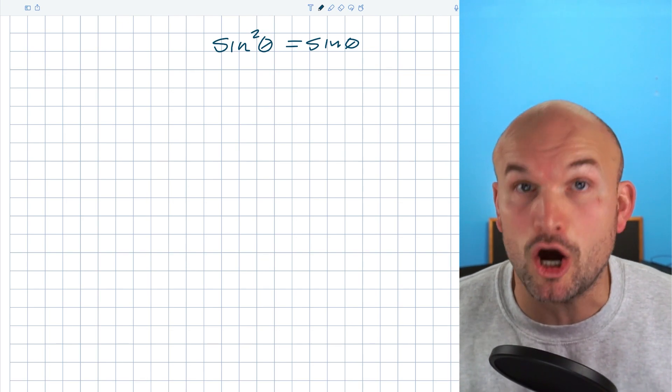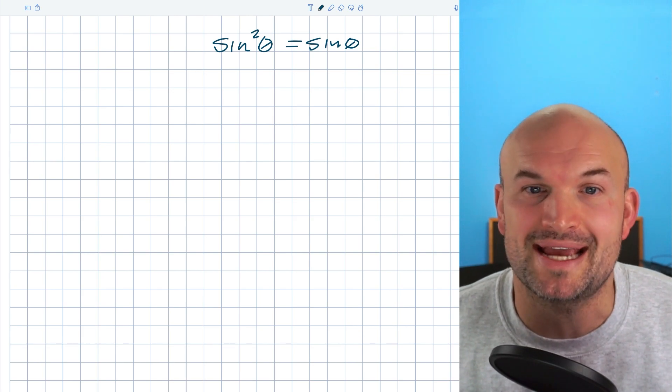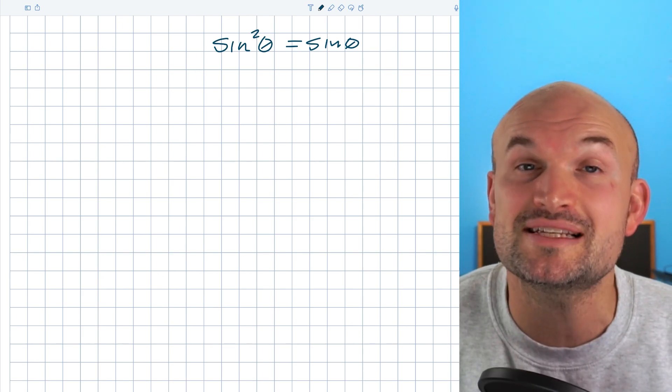In this problem I will find all of the solutions as well as the solutions between zero and two pi. But the first thing I want to do is address the mistakes that I see students make.